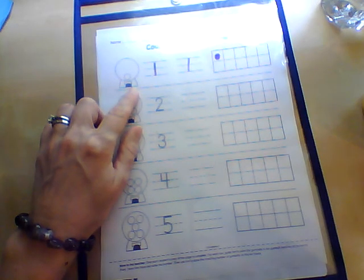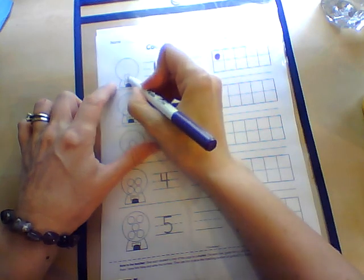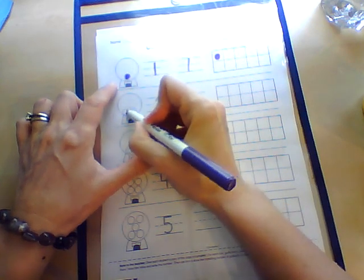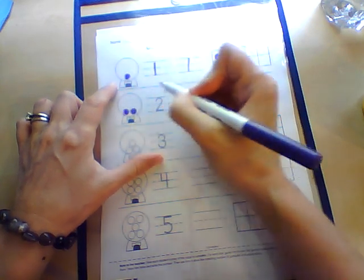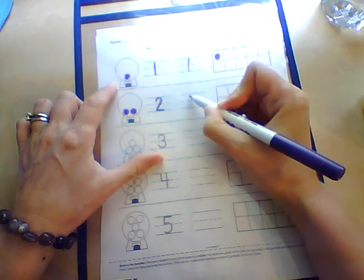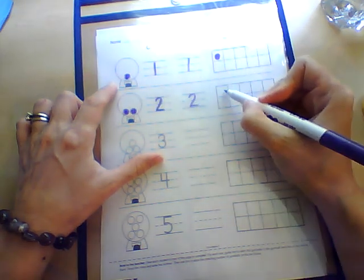We always start in the upper left hand corner. You can color your gumballs, count them, write, fill your 10 frame out here like this. Again, not randomly. It has to be in a sequential order.